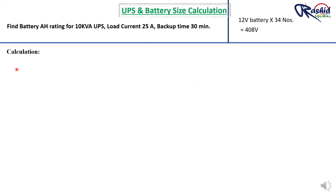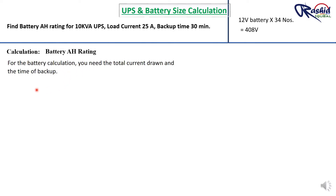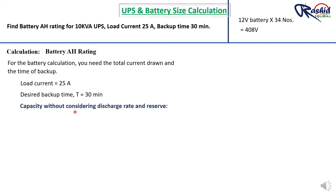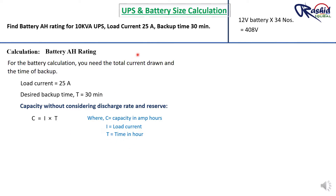Let's start the battery AH rating calculation. For battery calculation you need total current drawn and backup time. Load current I = 25 A, desired backup time T = 30 minutes = 0.5 hours. The basic formula is C = I × T, where C is battery capacity in ampere-hours. So C = 25 × 0.5 = 12.5 AH.